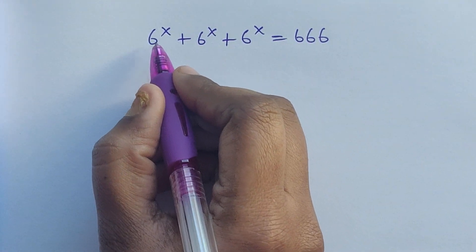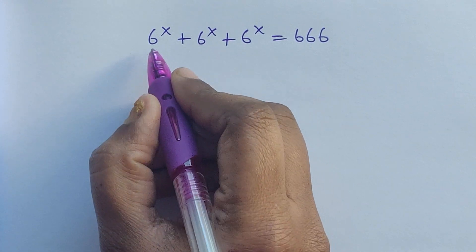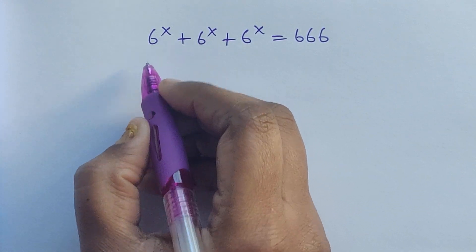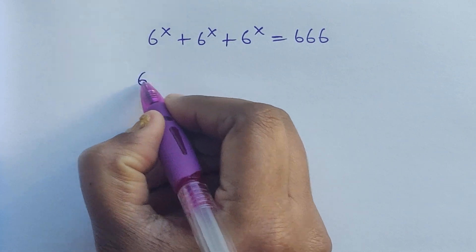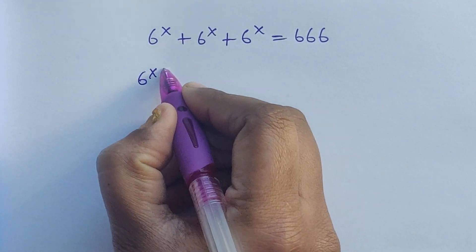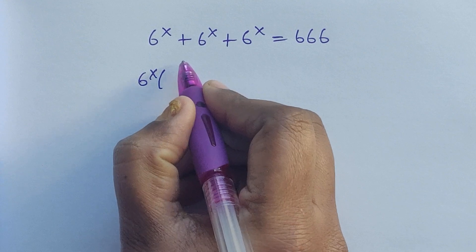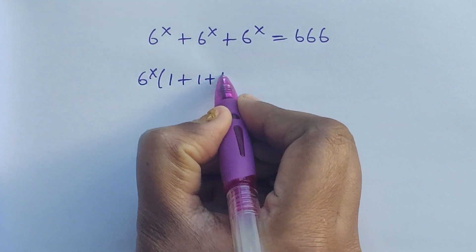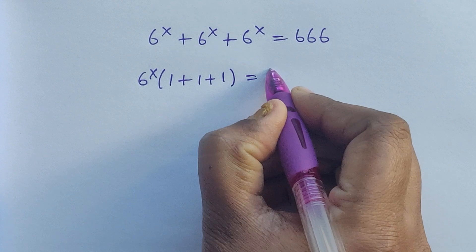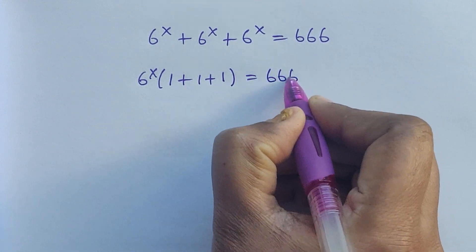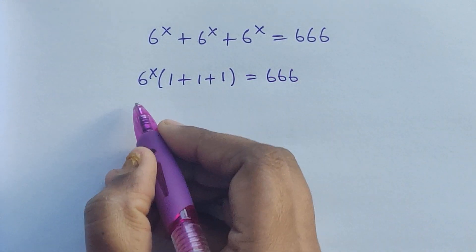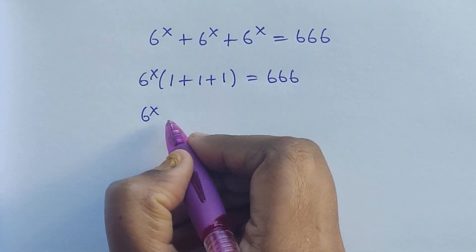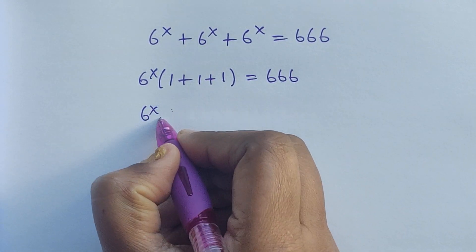First we have to take out a common number. The common number here is six to the power of x. So six to the power of x comes out, and we write the leftover numbers: one plus one plus one, equal to 666. Six to the power of x times — we add these three numbers and we get three.